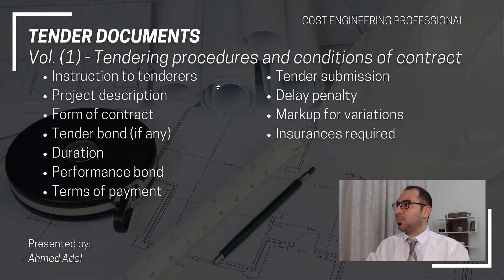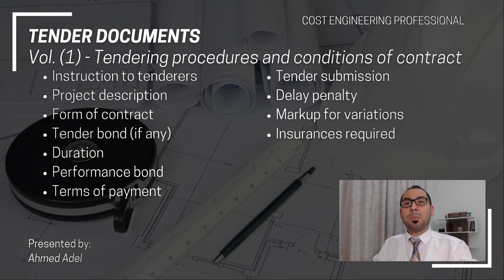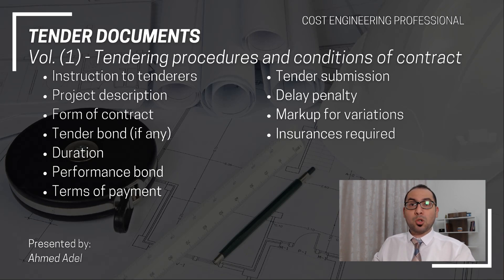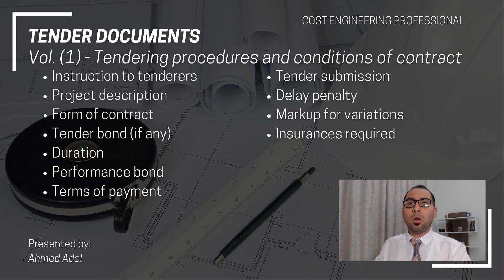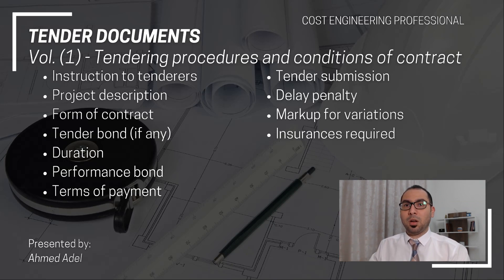Volume one is tendering procedures and conditions of contract. In this volume you will find things such as instructions to tenderers — what to do as a tenderer. A tenderer is the contractor who is pricing this specific project. So as a tenderer, how can you submit your price and what are the instructions the client is giving you to follow in the tender. You can also find the project description — project name, project location, what the project consists of — and the form of contract, including which contract will be used if your offer is selected.